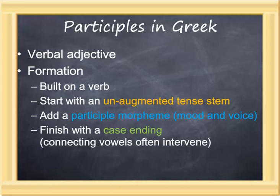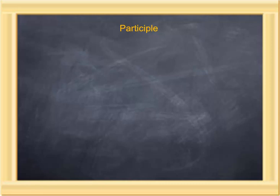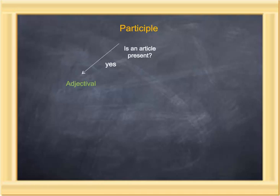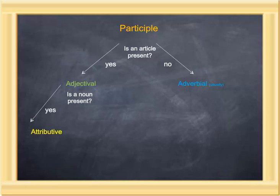When a reader meets a participle, its function is analyzed through a series of questions. If not, the participle is most likely adverbial. If the participle is adjectival, a second question is asked: is a noun present with which the participle agrees in case, gender, and number? If so, the participle functions like an attributive adjective. If not, the participle functions like a substantive, taking the place of a noun or pronoun.